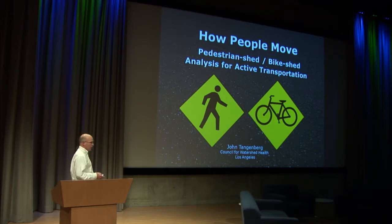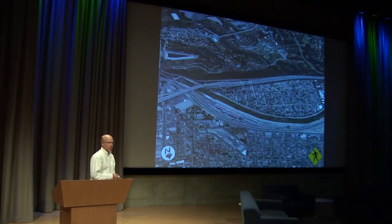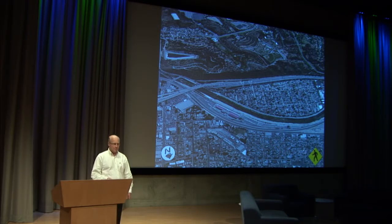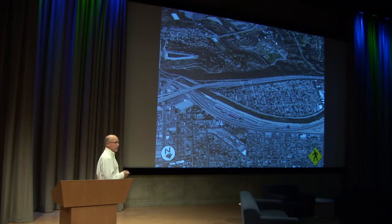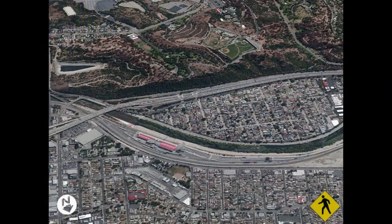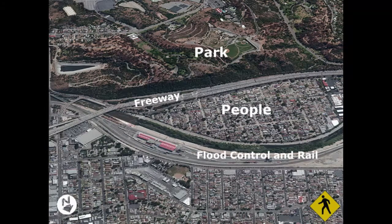I work in the water realm, and modeling a watershed is well-established. But we were charged with doing a score on parkland in Los Angeles within the Arroyo Seco watershed. In the Arroyo Seco, we have some separations — we have the park, the people, and we have the freeway and the flood control channels. Traditional ways of modeling access to parks weren't going to work for us in this situation five years ago.